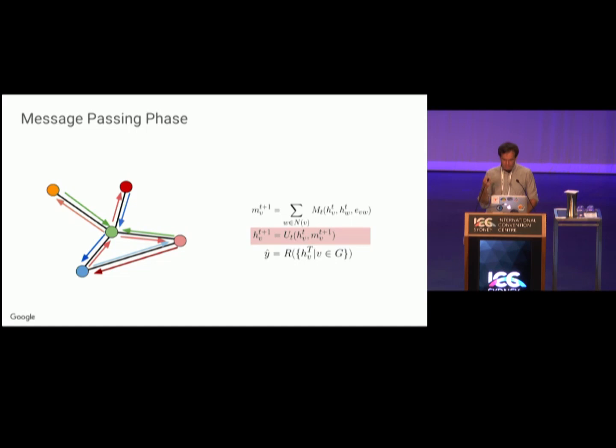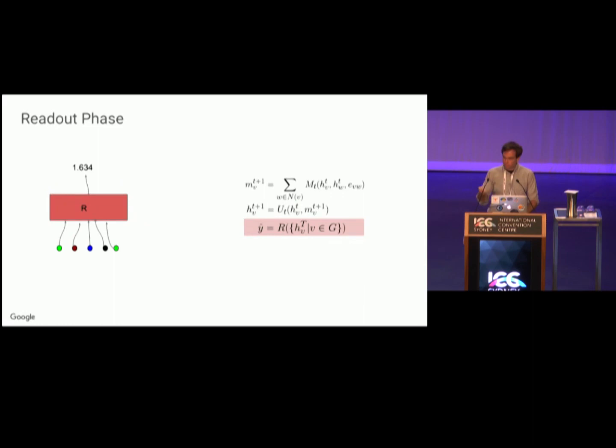That was a single message-passing step. You're going to do this T times, where T is a hyperparameter. Again, you take your new hidden states, you compute messages again, aggregate, and apply your update function. That was the message-passing phase. After you do T message-passing steps, you then read out. During the readout phase, you basically forget all the edge information and just take your final hidden states at your nodes, and you feed that set of final hidden states into your readout function. As long as your readout function is invariant to the order of nodes, the output of your message-passing neural network will also be invariant to the order of nodes.